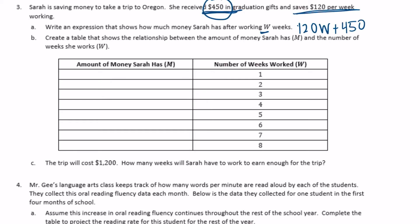Part B: Create a table that shows the relationship between the amount of money Sarah has, M, and the number of weeks she works, W. If she works one week, $120 times one plus $450 — so $120 plus $450 would be $570. If she works two weeks, $120 times two plus $450: 120 times two is $240, plus $450 would be $690. For three weeks, $120 times three plus $450 — $120 times three is $360.